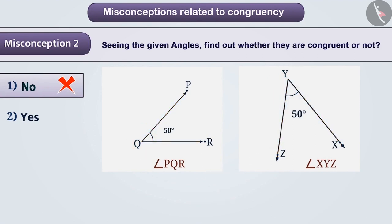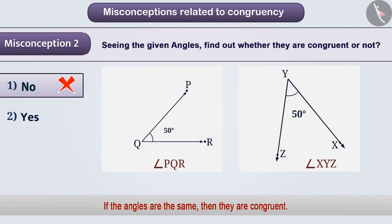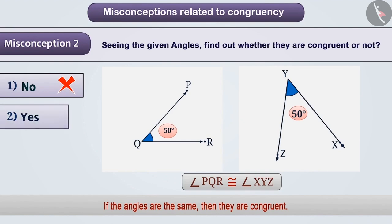The correct understanding is that if the measurements of the angles are the same, then they are congruent. No matter how long the lengths of their arms are or how the position is. Here, angle PQR and angle XYZ measure both these angles at 50 degrees. Hence, angle PQR is congruent to angle XYZ. Here, option 2 is the correct answer to this question.